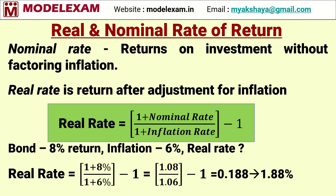Suppose a bond gives you 8 percentage return and inflation stands at 6 percentage. So what is the real rate of return? In simple terms we can say 8 minus 6 equals 2 percentage, that is the real rate of return. However, we should not use that in financial planning calculations. We should use the formula, and if we substitute the values in the formula, we get the real rate of return as 1.88 percentage.